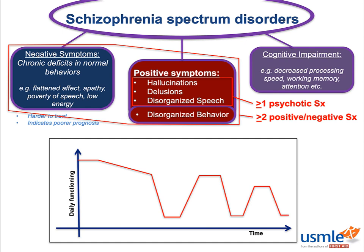Your typical vignette will start off with a 20-year-old guy in college, or a 30-year-old lady at a new job, full of potential, who starts to get a little off. They may start acting strangely, performing poorly at work, maybe picking up a new religion that's actually a cult. But at a certain point, the decline of function becomes a full-on psychotic break, during which their daily functioning is severely impaired. Eventually the episode ends, but their baseline function doesn't return to normal. After every psychotic break, you see a progressive decrease in baseline functioning.